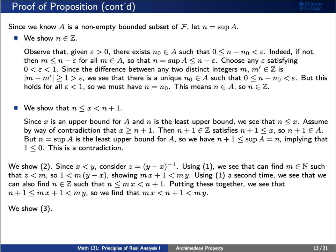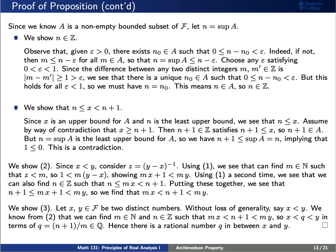Finally, we show statement 3. Choose any two distinct numbers x and y with x less than y. By statement 2, we find integers m and n such that m times x is less than n plus 1, which is less than m times y. Dividing everything by m, there is a rational number q — namely n plus 1 divided by m — such that x is less than q is less than y. Thus there exists a rational number between any two elements of f.